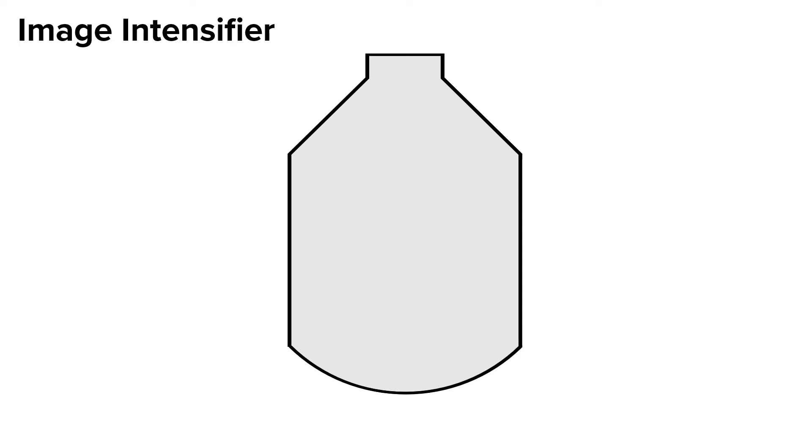There are six main components to the image intensifier. First, the whole image intensifier is about 9 inches long and is encased in glass. Within the glass, voltage can reach up to 25,000. Second, the input phosphor acts as a scintillation layer which converts x-rays into light.